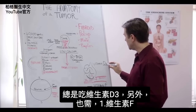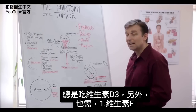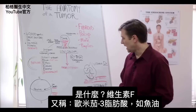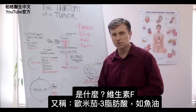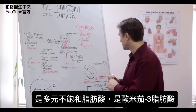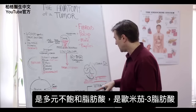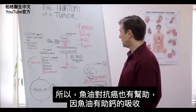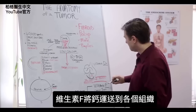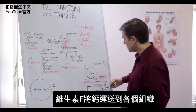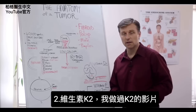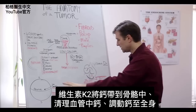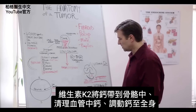We also need vitamin F. What is vitamin F? Vitamin F is another name for the omega-3 fatty acids, like in fish oil — the polyunsaturated fatty acids. That's why fish oil is also good for anti-cancer, because it helps you absorb calcium. So vitamin F transports calcium into the tissues, and then there is vitamin K2. Vitamin K2 drives the calcium all the way into the bone, cleans up the arteries, and helps mobilize calcium through the body.